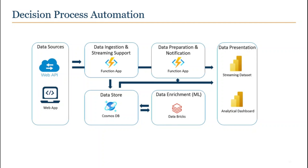There are certain business rules that execute every 15 minutes, which decide what actions should be taken — email notifications are sent based on business rules and data is sent to the streaming dataset. There are also analytical dashboards for historical data analysis, sourced from Cosmos DB, and a machine learning regression algorithm used for data forecasting. The customer wanted to move this entire setup from an existing tenant to a new tenant.